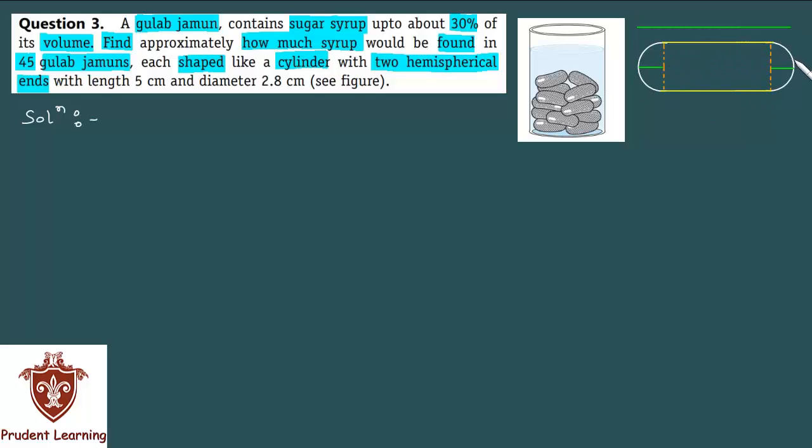I've drawn this myself - this represents one Gulab Jamun which has a cylindrical part and both ends are joined with hemispherical parts. We have the length of each Gulab Jamun as 5 cm and diameter as 2.8 cm.